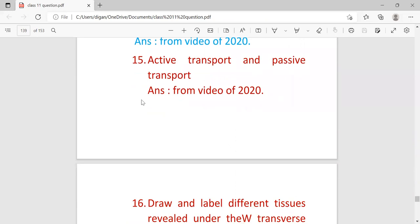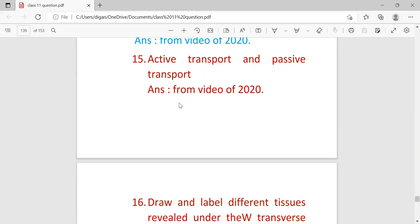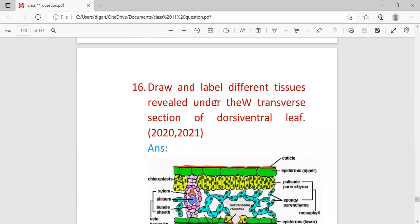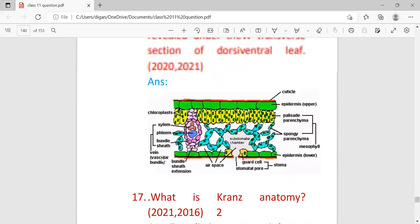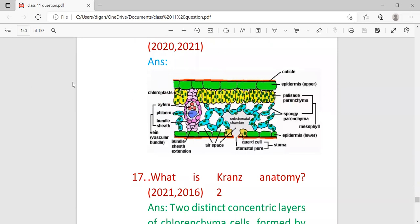Active transport and passive transport - answer you will get in the video of 2020, already uploaded. Next, draw and label different tissues revealed under the transverse section of the dorsiventral leaf. It came continuously, repeated two times, 2020 and 2021. This is the diagram: upper epidermis, lower epidermis with stoma, pole-like structures covered by kidney-shaped guard cells.